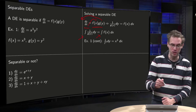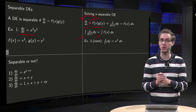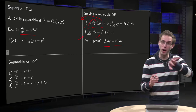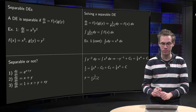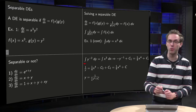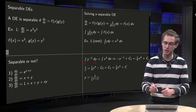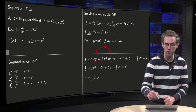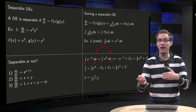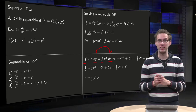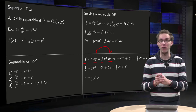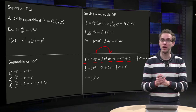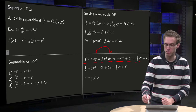Let's continue with example 1: dy/dx equals x cubed times y squared. First we separate it, getting (1/y²) dy = x³ dx — all y's on the left and all x's on the right. Then we add the integral sign: the integral of y to the power minus 2 with respect to y equals the integral of x cubed with respect to x. The dx's and dy's are important because they tell us which variable to integrate with respect to. The antiderivative of y⁻² is −y⁻¹ plus constant c₁, and the antiderivative of x³ is (1/4)x⁴ plus constant c₂.